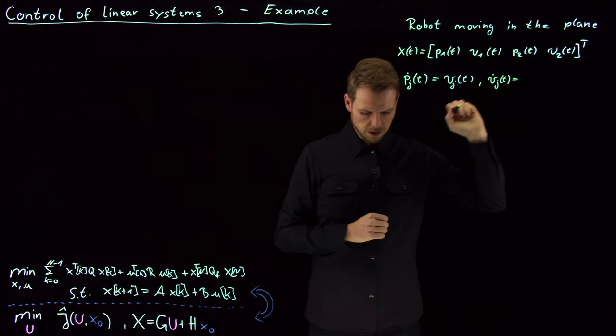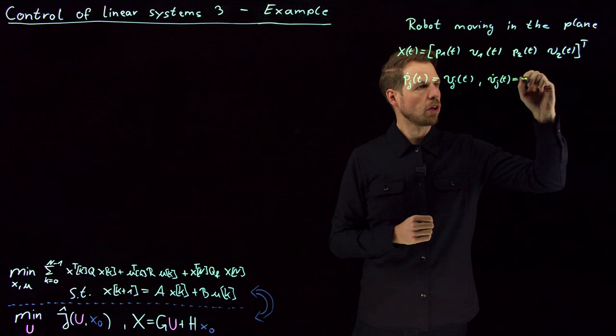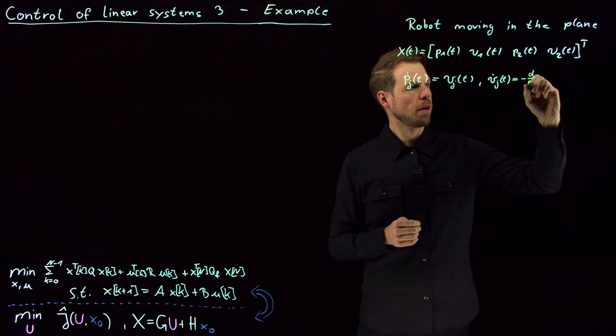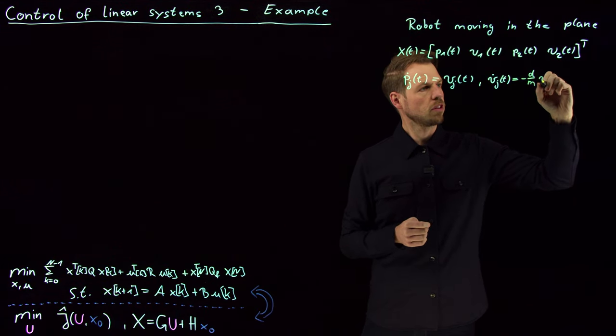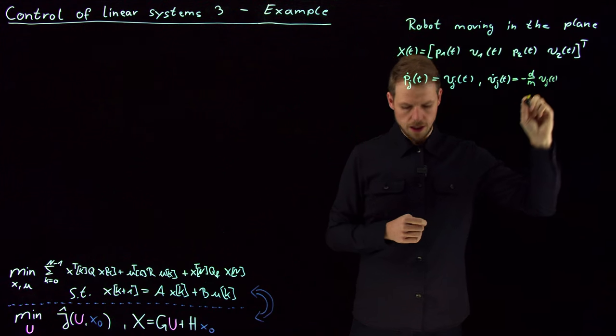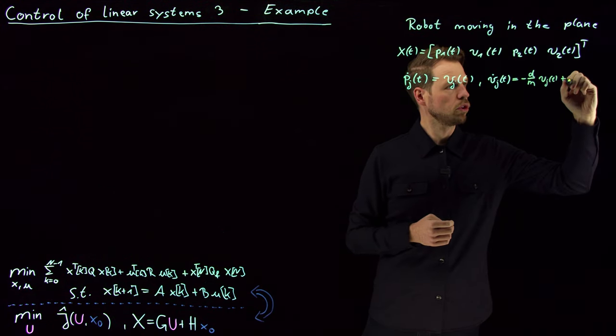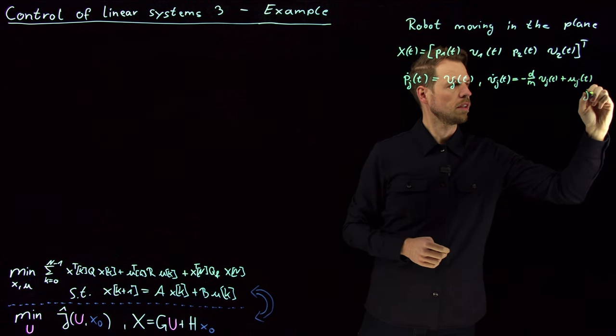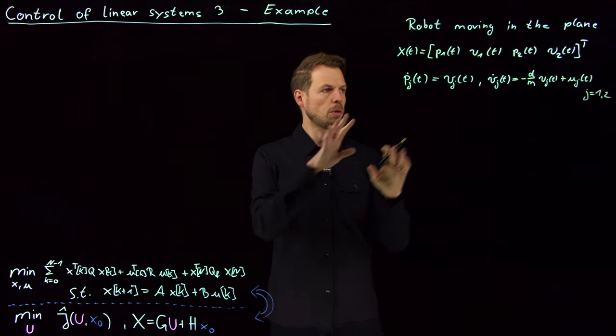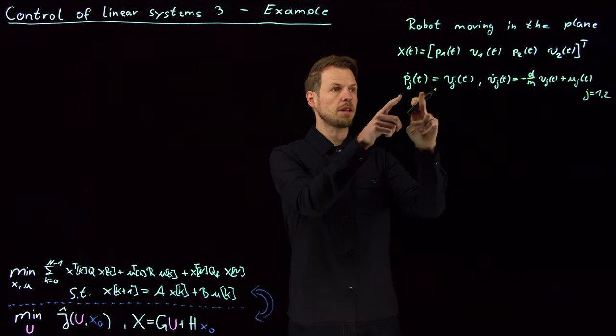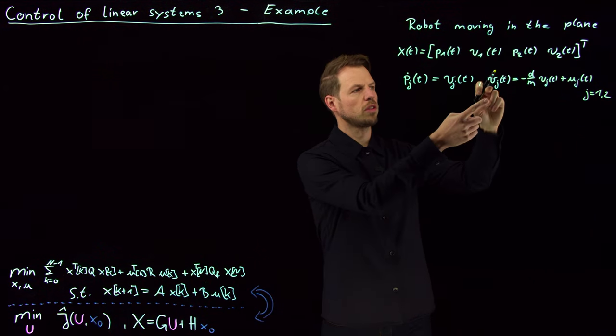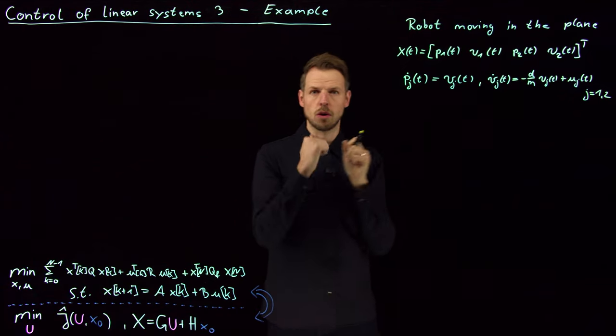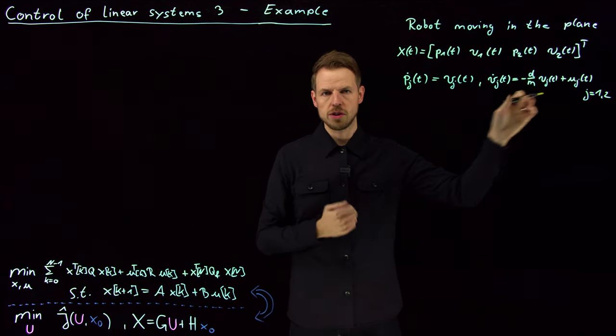This is something we can do ourselves. This will be the control input, as well as a friction term just as we did in the damped oscillator. So what we're going to consider is a dampening term which is d, the dampening constant or friction coefficient, the change divided by the mass times the velocity, and then plus a control input u_j of t. And this is for j equals one or two. So we have this for both coordinates.